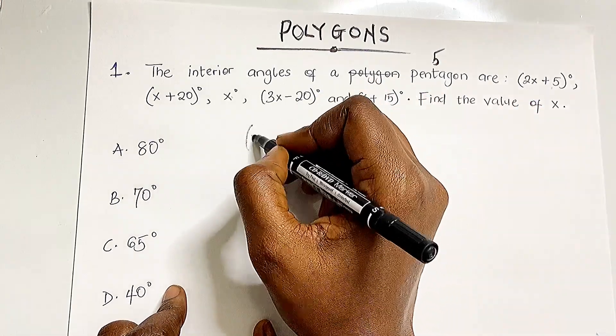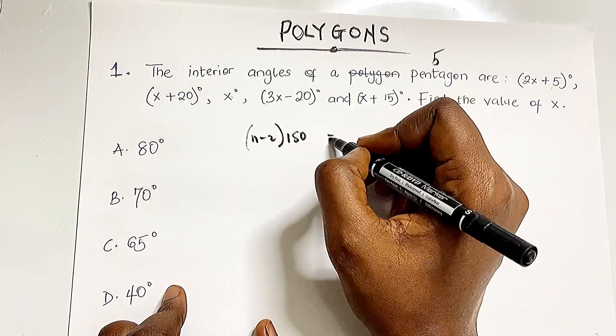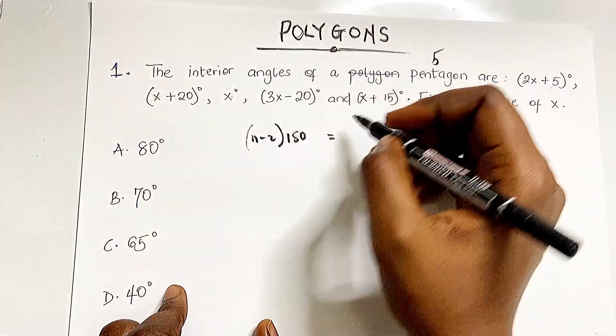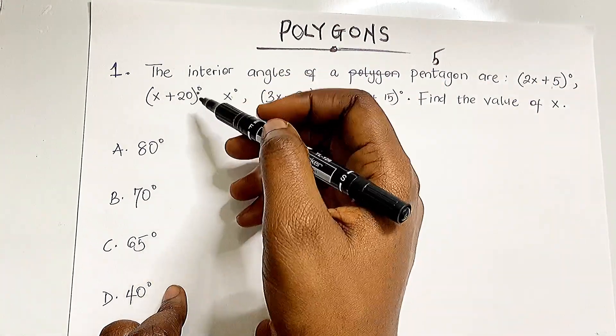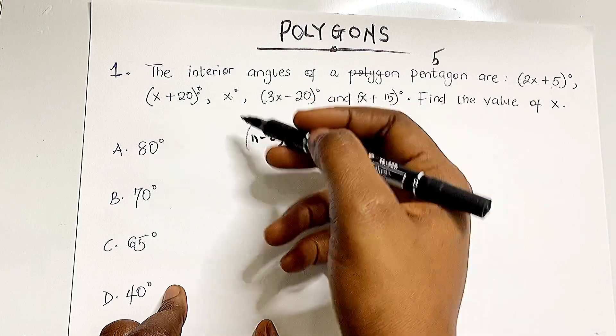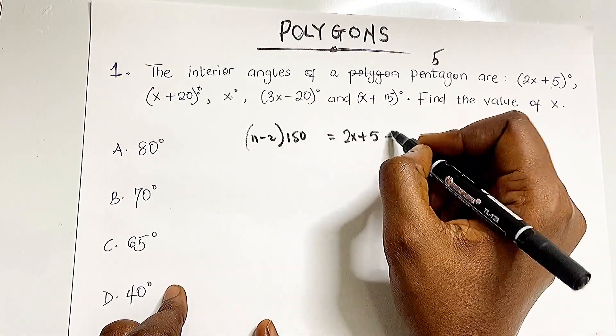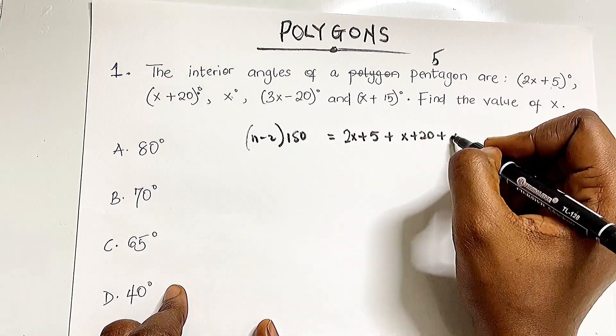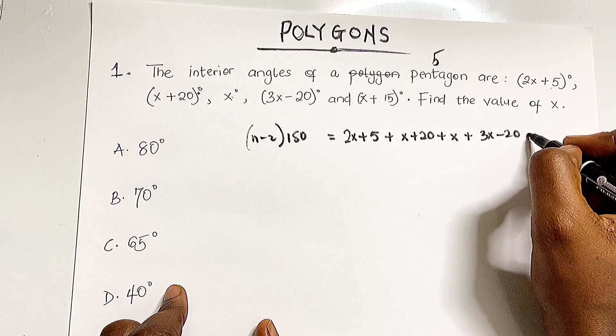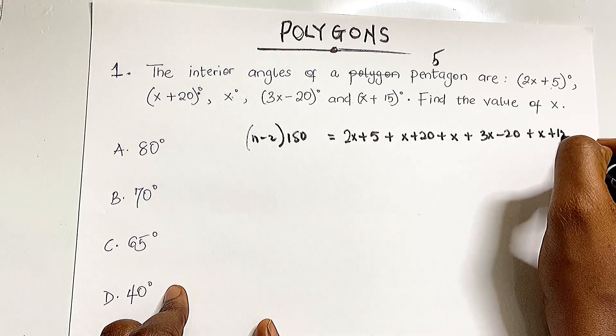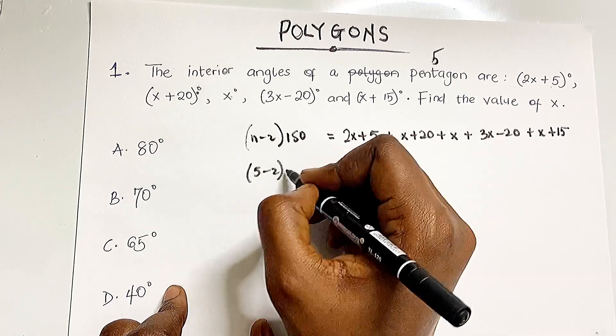That formula is (n-2) × 180. This equals the sum of all the angles. So we add them up: (2x+5) + (x+20) + x + (3x-20) + (x+15).